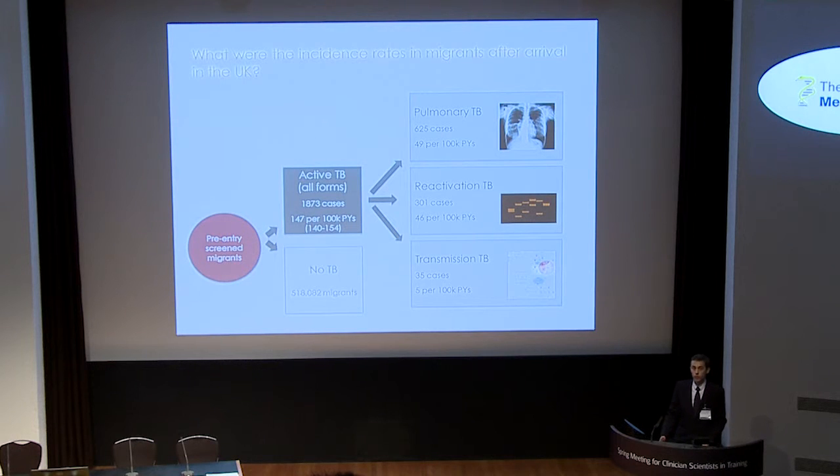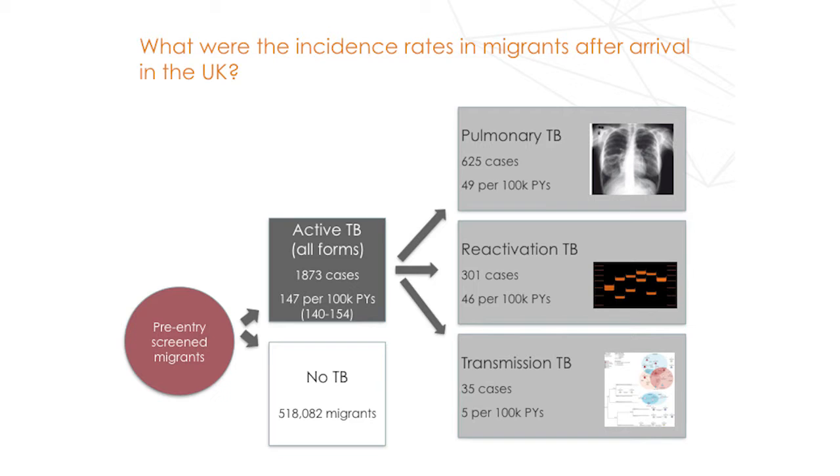These reactivation cases are important because at the moment we're just looking for active TB, and this form is potentially preventable if a latent testing and screening programme were introduced. There's a lot of negative media about TB in migrants, and we also looked at transmission — how many of these TB cases in the migrant population went on to spread TB? If you read the Daily Mail, you'd think it was 100%. Actually, we found 35. Of the 1,873 cases of TB, only 35 had any indication of onward transmission. So while these migrants clearly have an increased personal risk of TB, they do not go on to spread TB to the population.